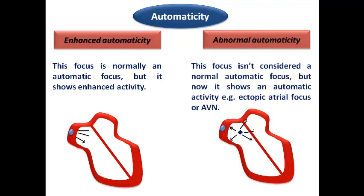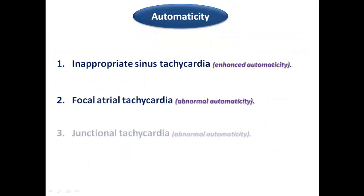In abnormal automaticity, the focus is not a normal automatic focus — like an atrial focus, AV nodal focus, or ventricular focus — and when it shows automatic activity we call this abnormal automaticity, because these foci don't normally show automaticity. One very common example is inappropriate sinus tachycardia, an example of enhanced automaticity, where the SA node shows enhanced activity leading to tachycardia without any secondary cause.